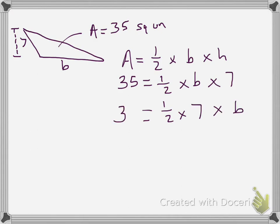So, 1 half of 7. Now, 7 is an odd number, so this doesn't work out evenly. But 1 half of 7 is 3 and a half, or 3 and 5 tenths. So, I'll write it as 3 and 5 tenths times B. And that's going to equal 35.